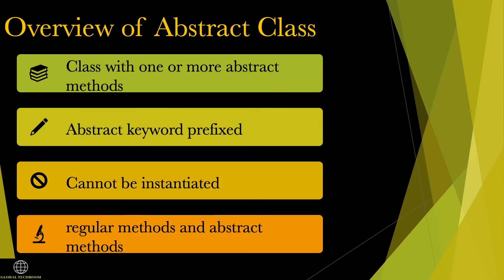An abstract class is a class with one or more abstract methods. It has the abstract keyword prefixed in it. Abstract class in Java cannot be instantiated, meaning we cannot create objects of abstract classes. It can have both regular methods and abstract methods.